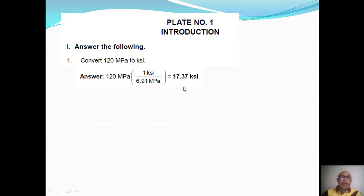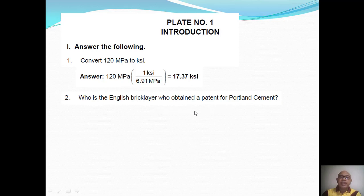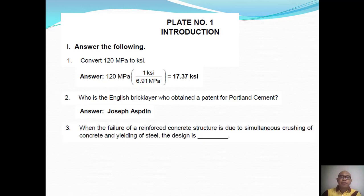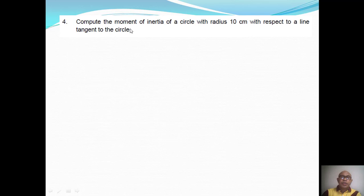Question Number Two: Who is the English bricklayer who obtained a patent for Portland cement? The answer is Joseph Aspdin. Question Number Three: When the failure of a reinforced concrete structure is due to simultaneous crushing of concrete and yielding of steel, the design is called balanced design.